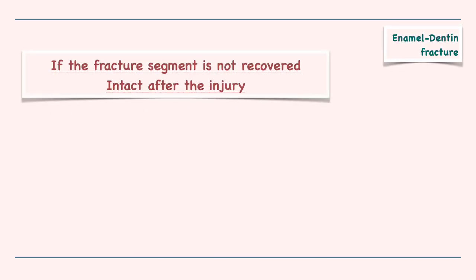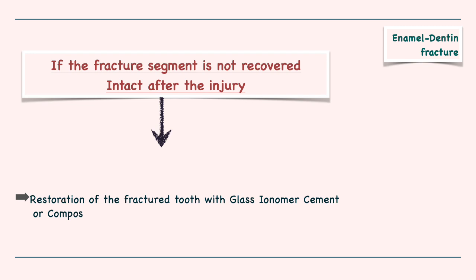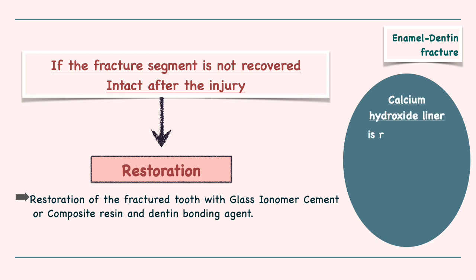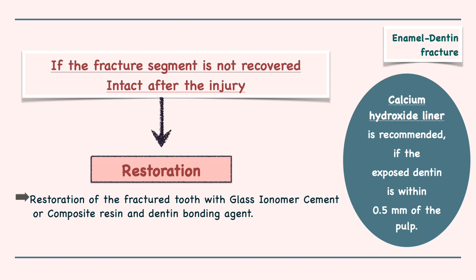If the fractured segment is not recovered intact after injury, the tooth can be restored with glass ionomer cement or composite resin and dentine bonding agent. A calcium hydroxide liner is recommended if the remaining dentine thickness is less than 0.5 mm, in which case the pink pulp will be visible without any bleeding.